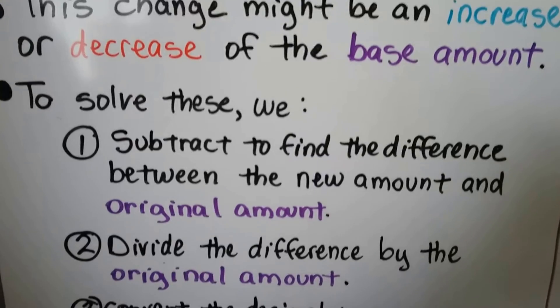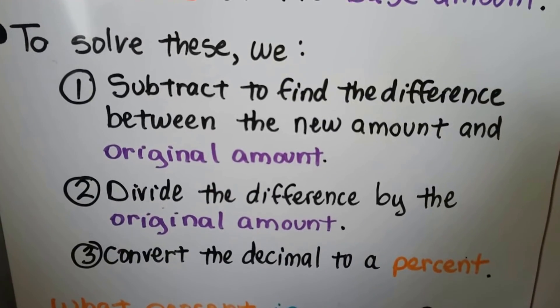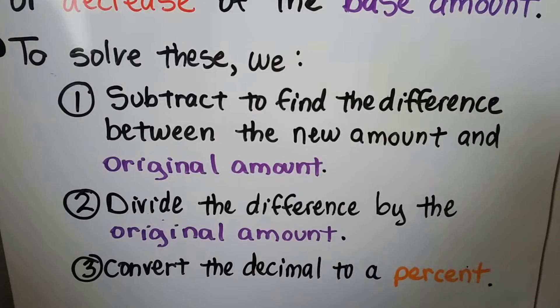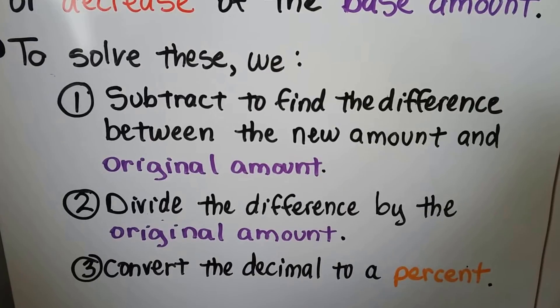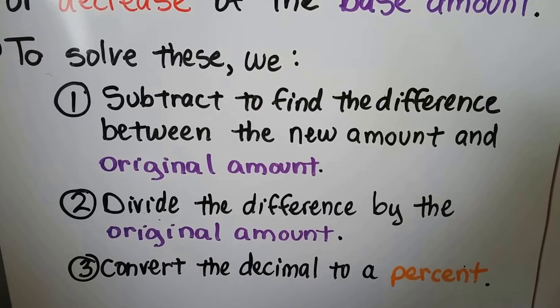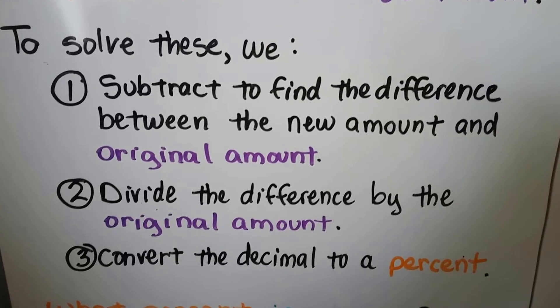To solve these, we follow three steps. We subtract to find the difference between the new amount and the original amount, then we divide the difference by the original amount, and then we convert the decimal to a percent.